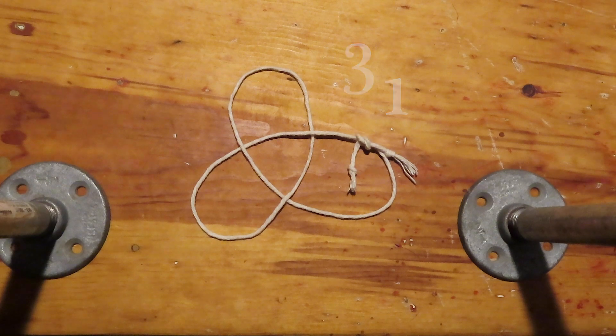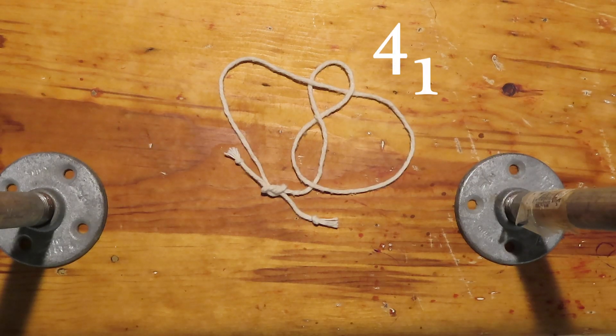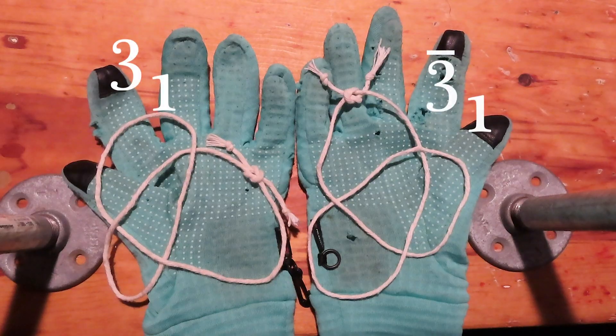For 3 and 4 crossings there are exactly 1 prime knot, up to a choice of chirality. That is, up to a choice of handedness.